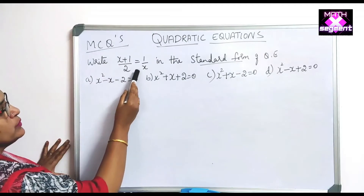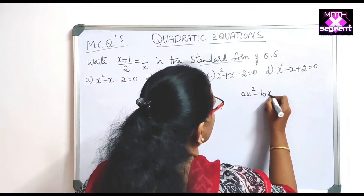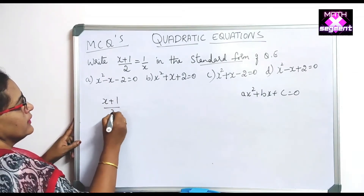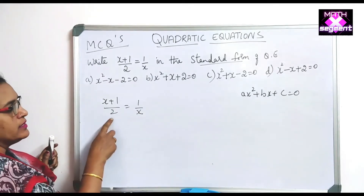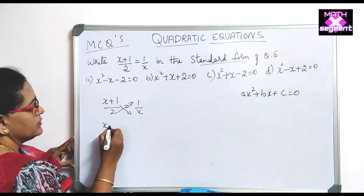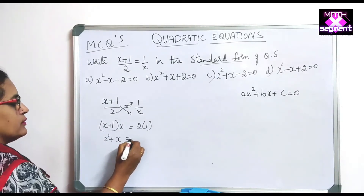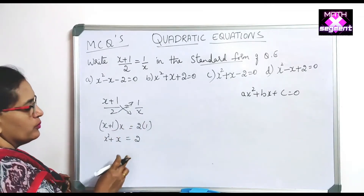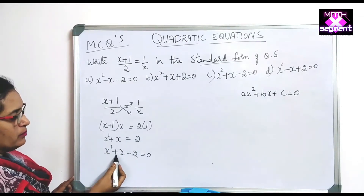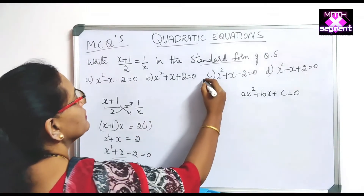MCQ: Write x + 1/2 = 1/x in standard form. The standard form is ax² + bx + c = 0. Cross-multiplying: (x + 1)·x = 2·1, giving x² + x = 2. Bringing 2 to the left: x² + x − 2 = 0. This matches option C, so C is the correct answer.